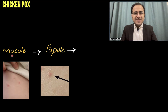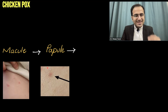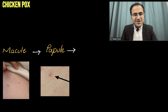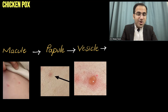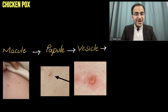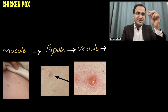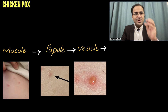The rash starts to appear as a macule, a small red dot. Then it starts to get raised — it is slightly raised and forms a papule. Then it forms a vesicle. This is a vesicle on an erythematous base. It is also described as a dew drop on a rose petal — the base is red and erythematous, and over that there is a vesicle.